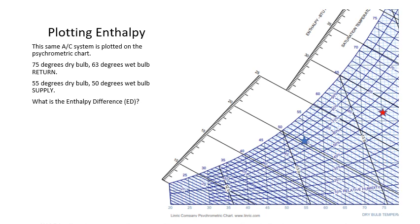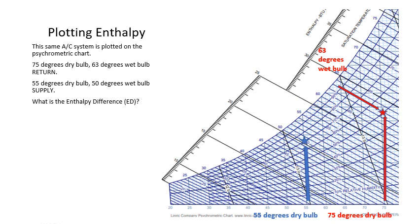We still have our sample air conditioning problem that we're working through. In this system, as we can see here, we have plotted two operating points — our return and our supply. Our return was 75 dry bulb, 63 wet bulb. Our supply was 55 dry bulb and 50 wet bulb. That's how we arrive at our operating points.